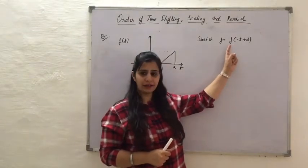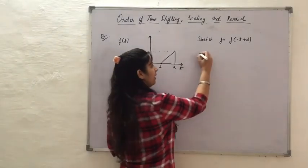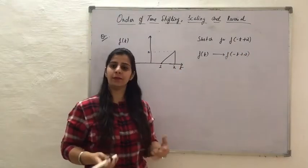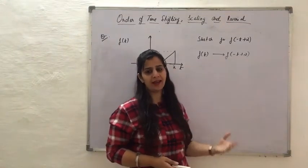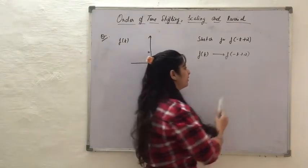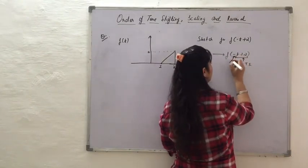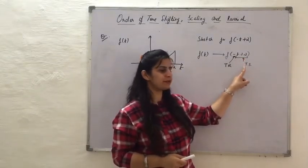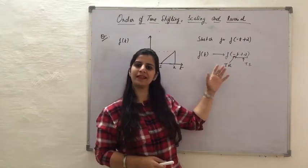The resultant function we want is f(-t+2). When f(t) is getting transformed to f(-t+2), the operations implemented are a time shifting operation and a time reversal operation — the time reversal is indicated by the negative sign. So let us start solving this.